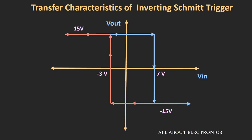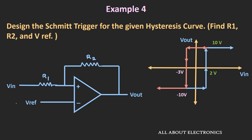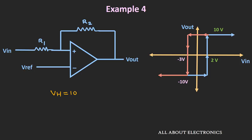In this next example, we need to design the Schmitt Trigger circuit to match a given hysteresis curve. We need to find R1, R2, and reference voltage. From the hysteresis curve, the saturation voltages are ±10V, the upper threshold voltage is 2V, and the lower threshold voltage is −3V. So VH = +10V, VL = −10V.